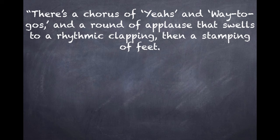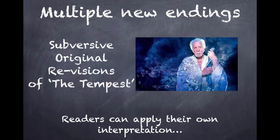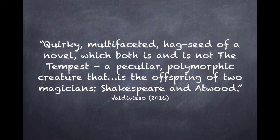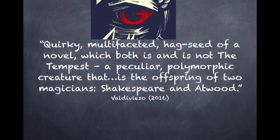There's a chorus of cheers and 'waiter goes' and a round of applause that swells to a rhythmic clapping, then a stamping of feet: 'Hag-Seed, Hag-Seed, we want Hag-Seed.' The multiple new endings allow Atwood to incorporate subversive original revisions of The Tempest. Atwood's ending could be seen as a playful wink to her devoted readers to apply their own interpretation in their response to what's being called this quirky, multifaceted Hag-Seed of a novel, which both is and is not The Tempest — a peculiar polymorphic creature that, like Caliban in the inmates' final reading of the play, is the offspring of two magicians: Shakespeare and Atwood.